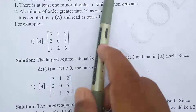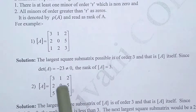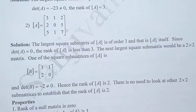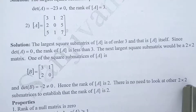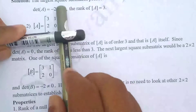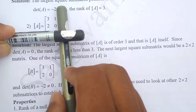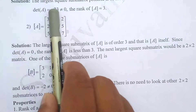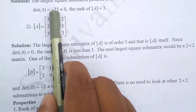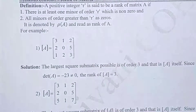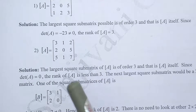For r = 2: at least one minor of order 2 is non-zero (we found −2), and all minors of order greater than 2 (i.e., order 3) are zero, which we already verified. Both conditions are satisfied, so the rank of this matrix is 2. There is no need to check all other 2×2 submatrices — we only need at least one non-zero minor.